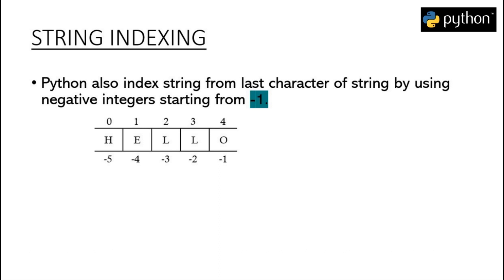For example, here we have the string 'hello'. Hello is made up of 5 different characters: H, E, L, L, and O. The first character of the string will be indexed at the 0th position, and the last character O will be indexed at the position which is 1 less than the total length of the string. In this case, O will be indexed at the 4th position, while the length of our string 'hello' is 5.